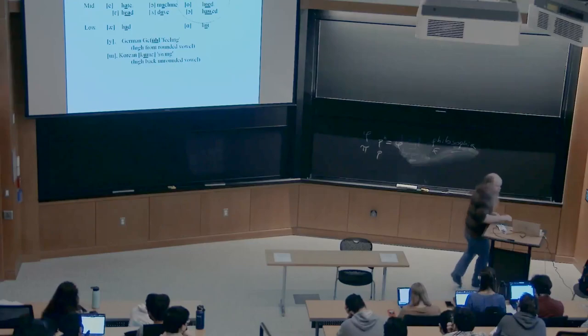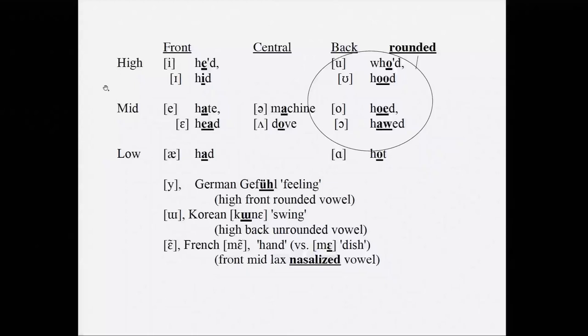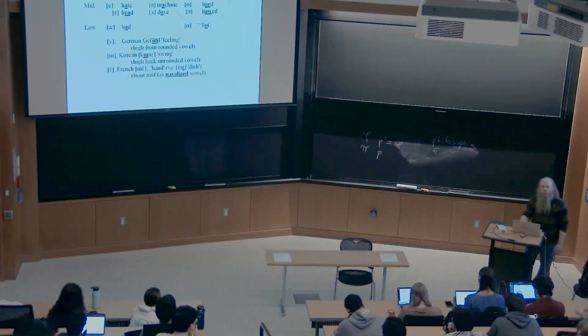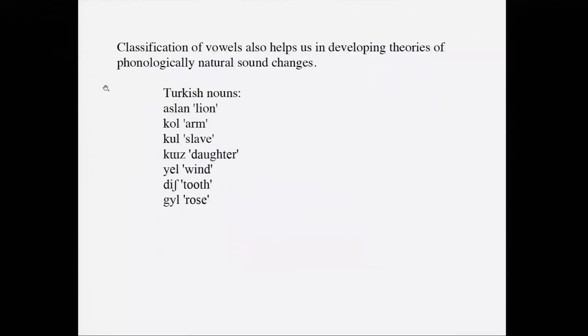There are also languages like French that have nasalized vowels. French has words like 'main' (hand) and 'mets' (dish), where you lower your velum and allow some air to flow through your nasal cavity as you make sounds. French, Portuguese, and many other languages do this.